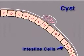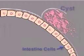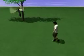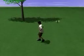Within each tiny cyst, the zygote divides many times. Eventually, the tiny cyst bursts and plasmodia migrate to the mosquito's salivary glands. She can now inject plasmodia into a new victim.